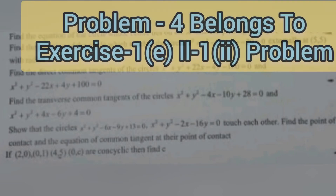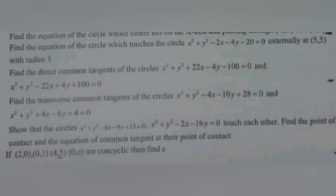The fourth problem is: show that the circles x² + y² - 6x - 9y + 13 = 0 and x² + y² - 2x - 16y = 0 touch each other, find the point of contact and the equation of the common tangent at their point of contact. This is also a very very important problem; these model problems are important 7-marks problems in IP examination.